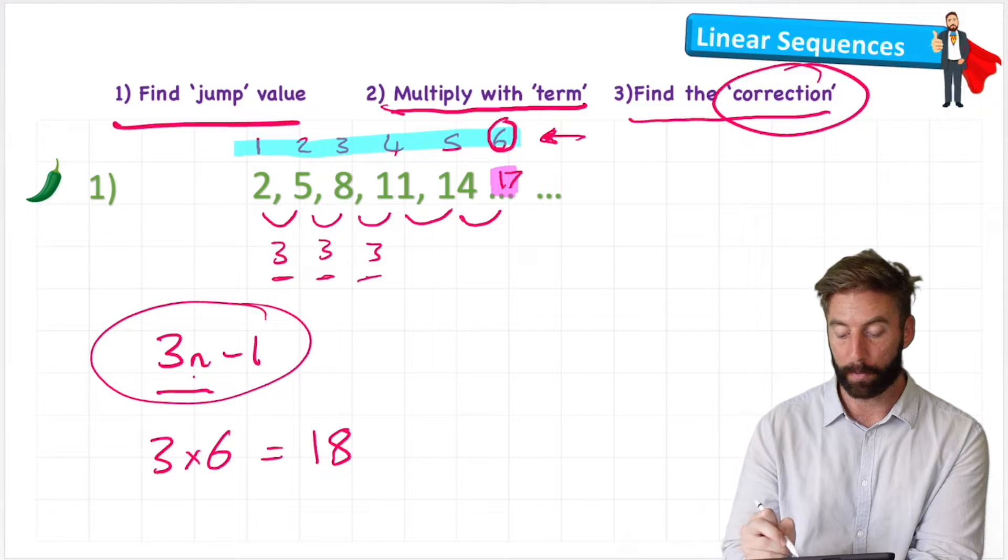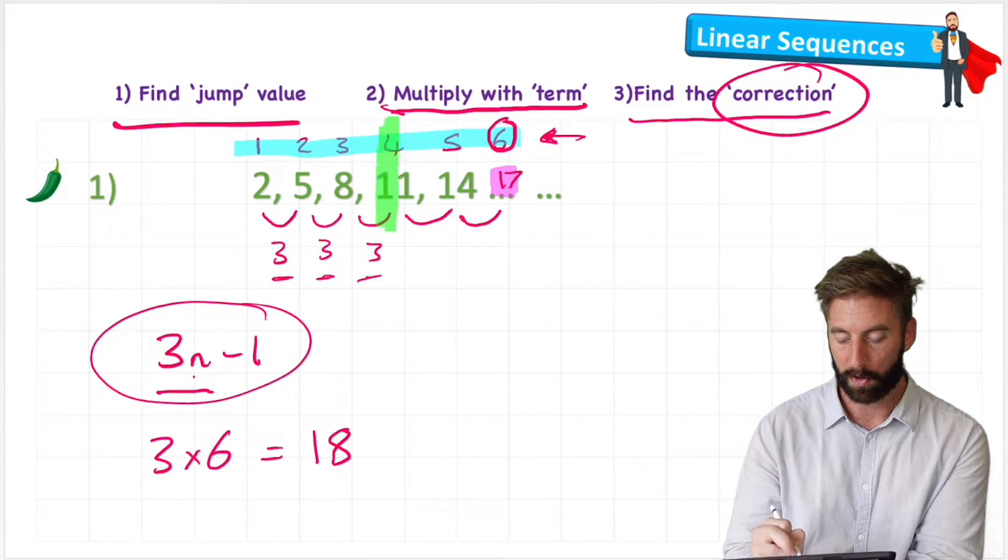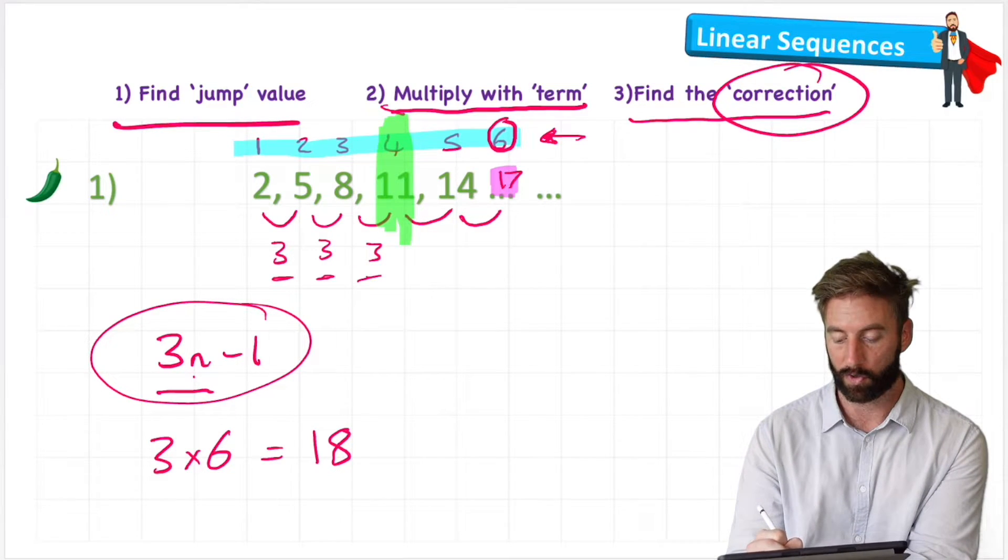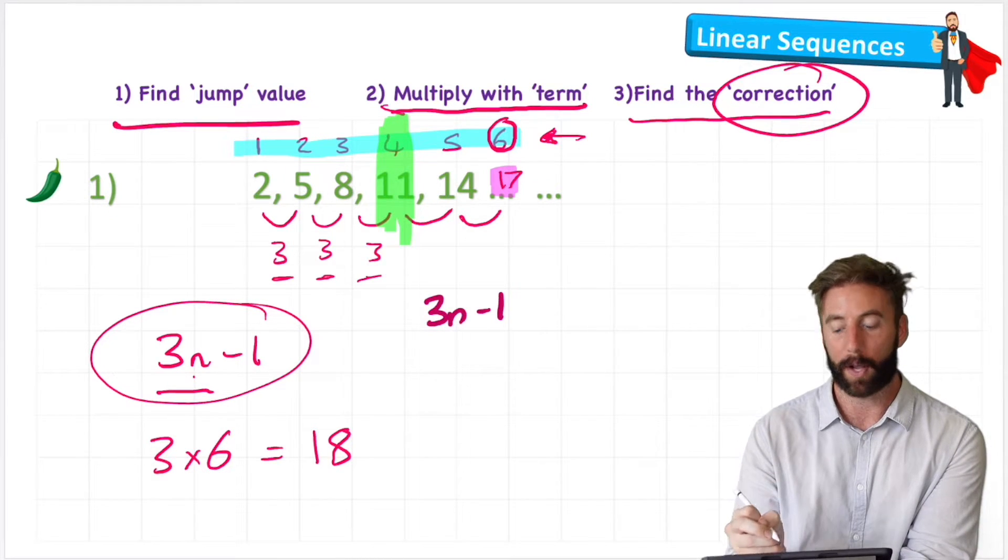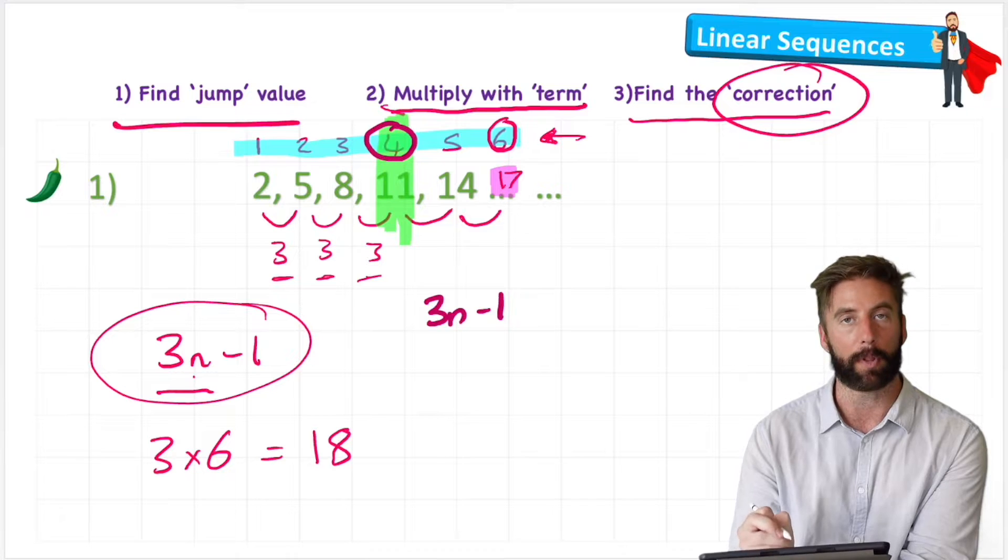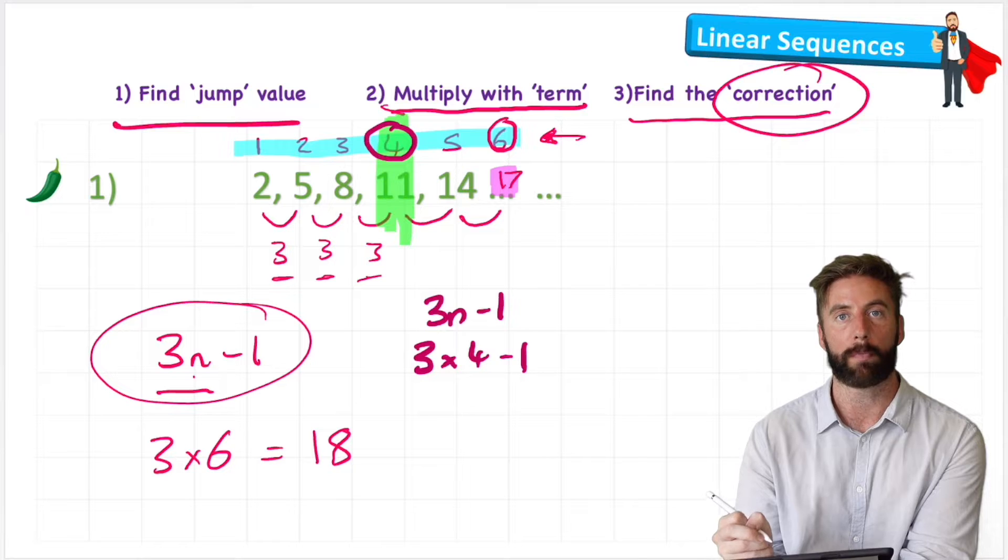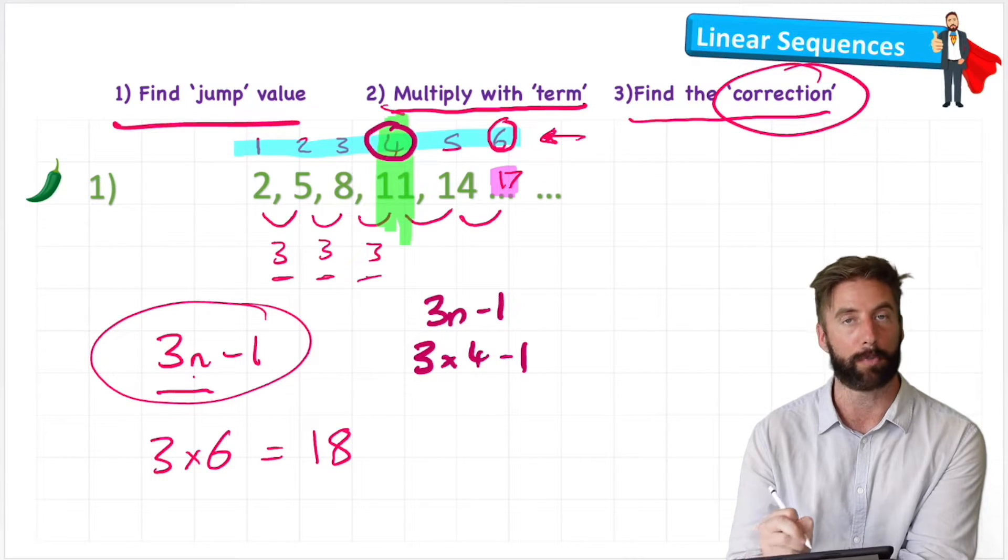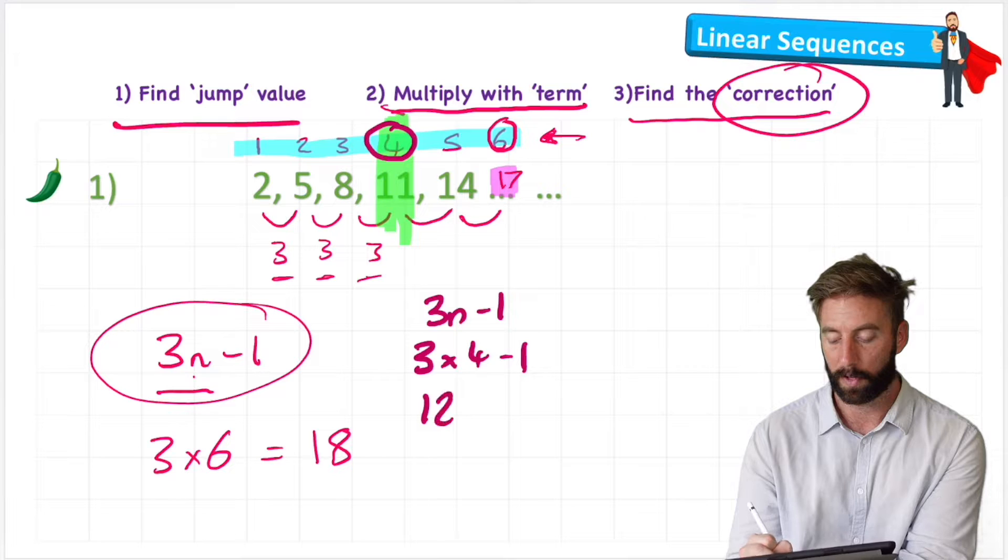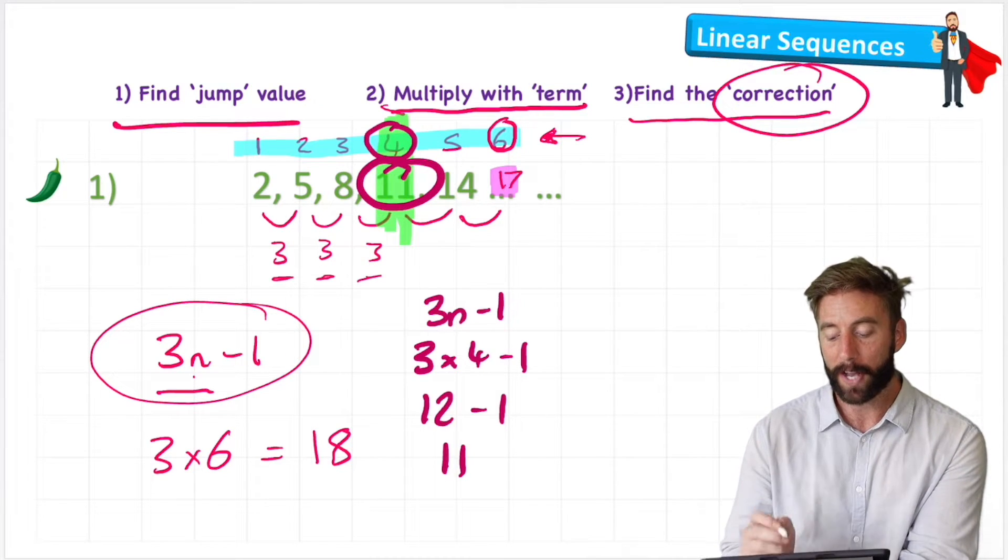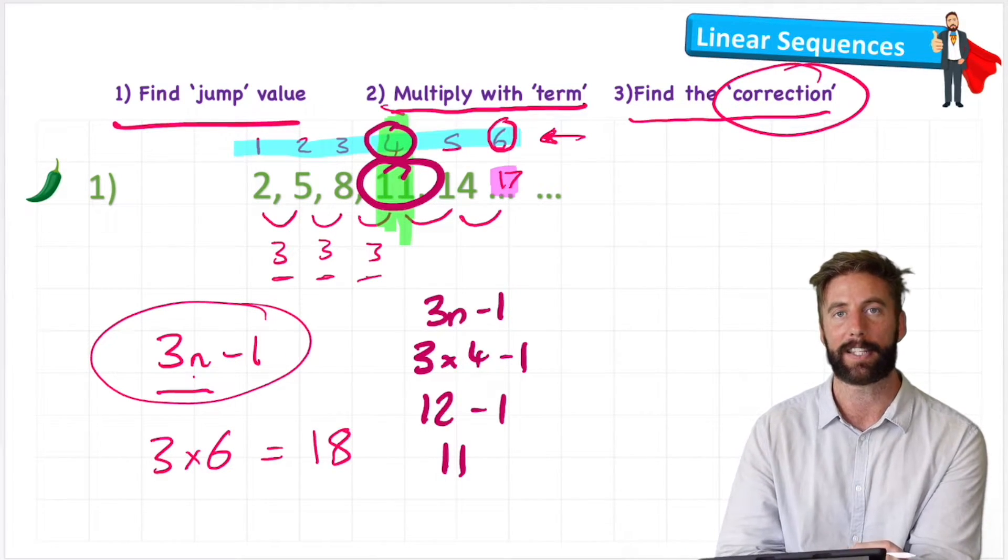Let's check that with one of the other numbers we know. Let's pick this column here, the 4. And let's use our formula to see if it works. So first things first, write the formula: 3n minus 1. Now I can replace my n with the number 4 because that's the number that we're wanting. So then it would be 3 times 4 minus 1. Use my BODMAS knowledge to understand I have to do the multiplication first. 3 times 4 is 12, minus 1. And 12 minus 1 is 11, and that is the number in the sequence. So it works. So I could use this formula to work out any number in this sequence.